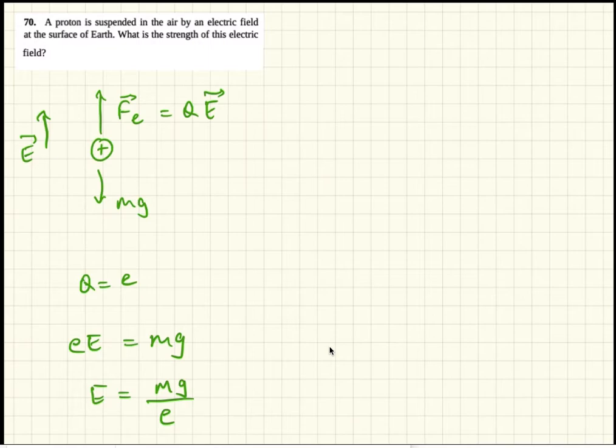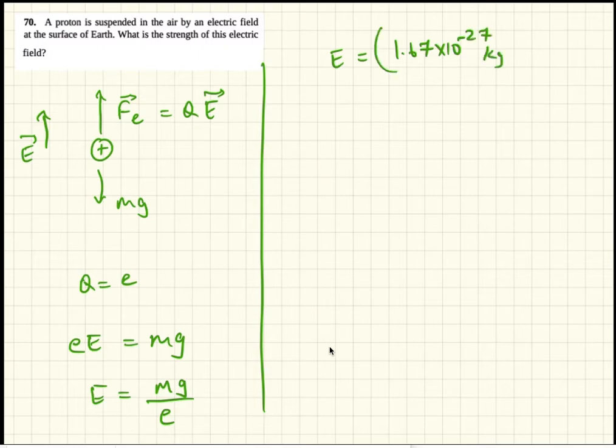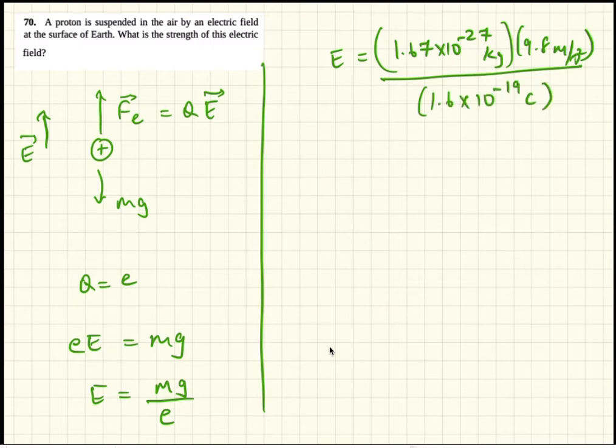And so the electric field strength is, the mass of the proton is 1.67 times 10^-27 kg. And g is 9.8 meters per second squared. And e, the charge of the proton, is 1.6 times 10^-19 coulombs.